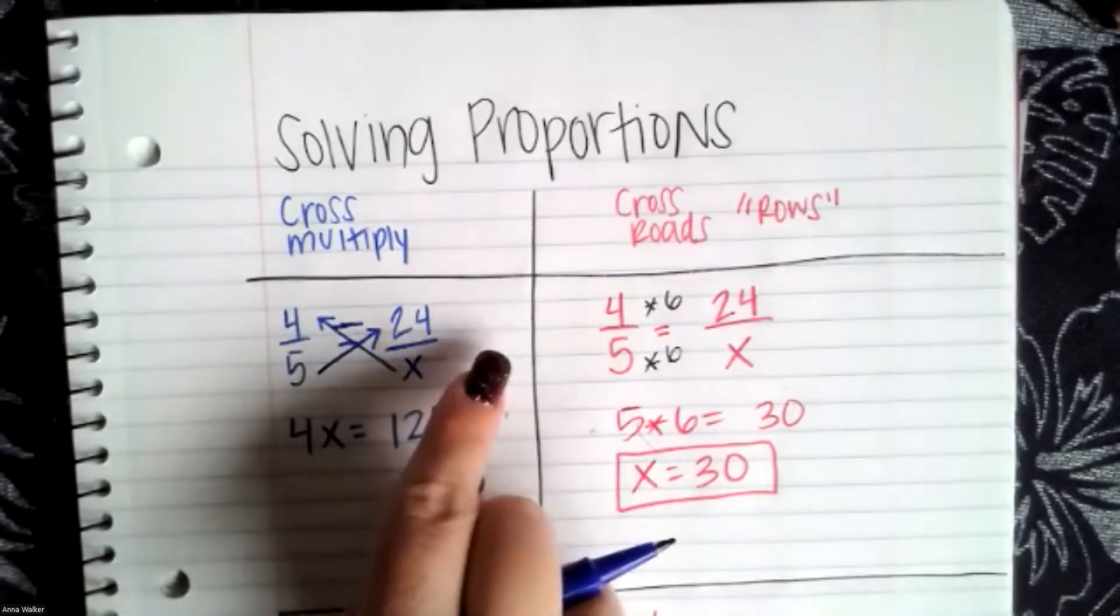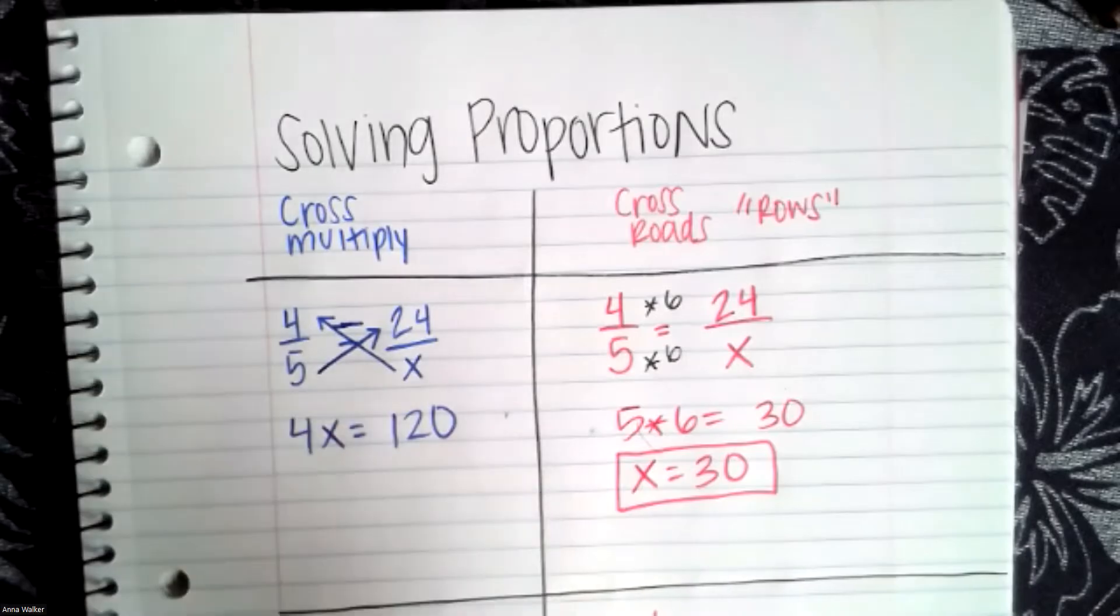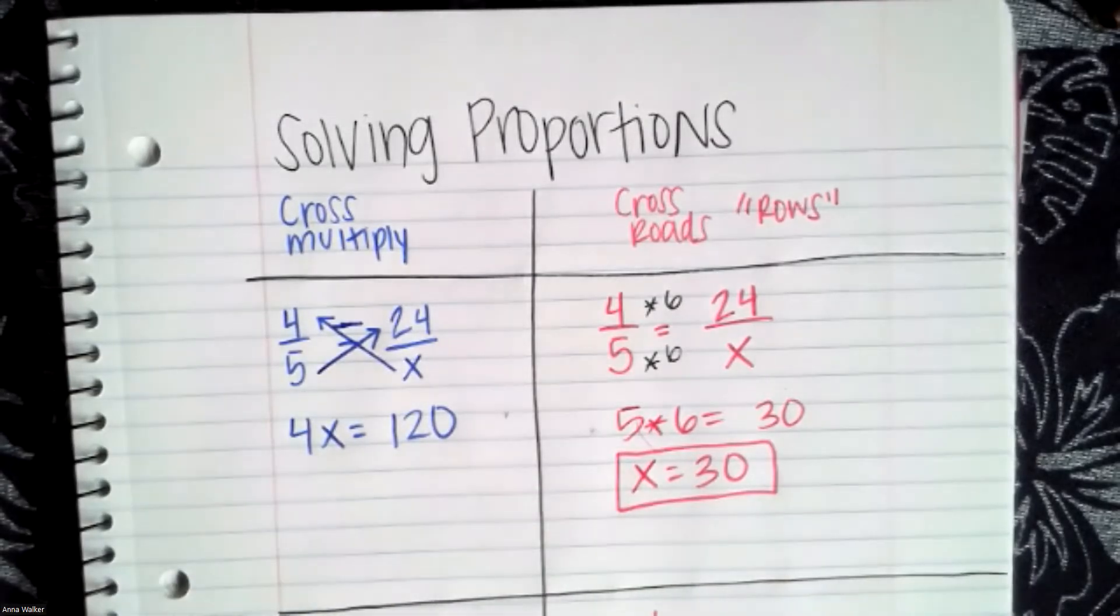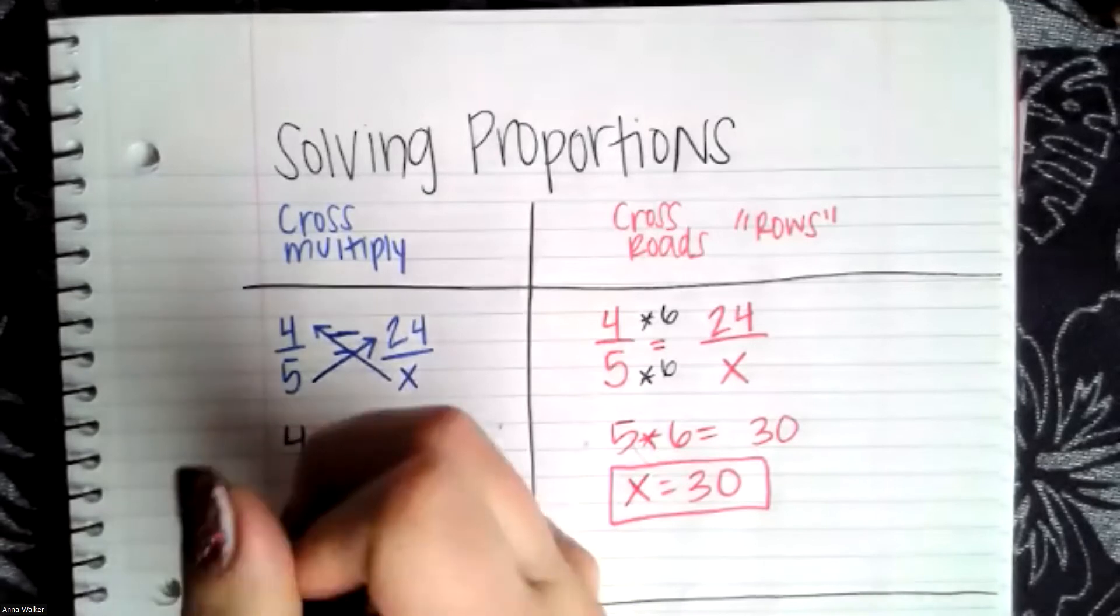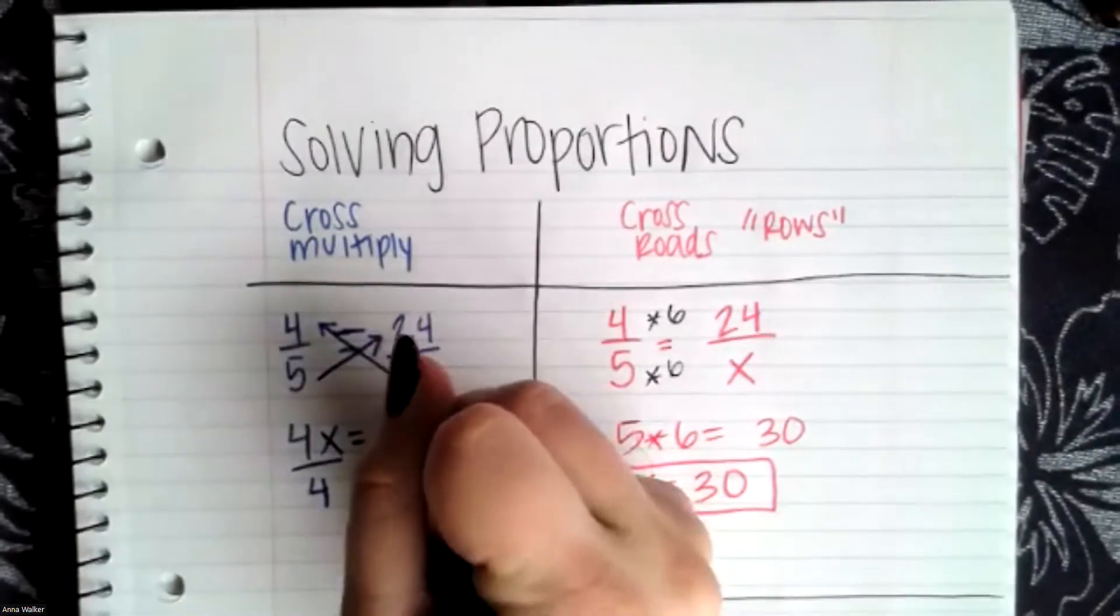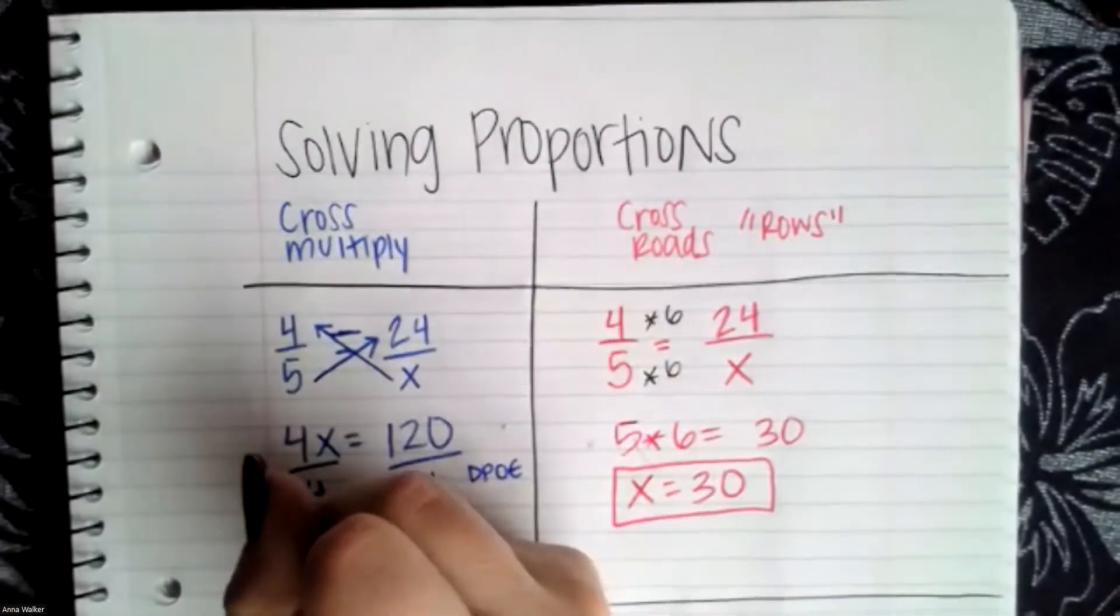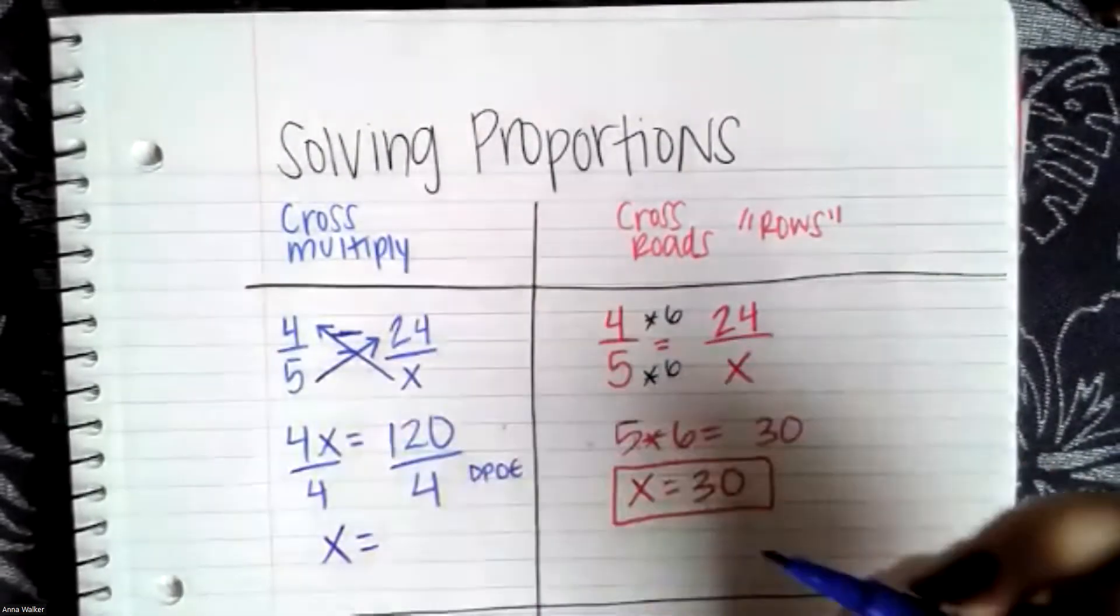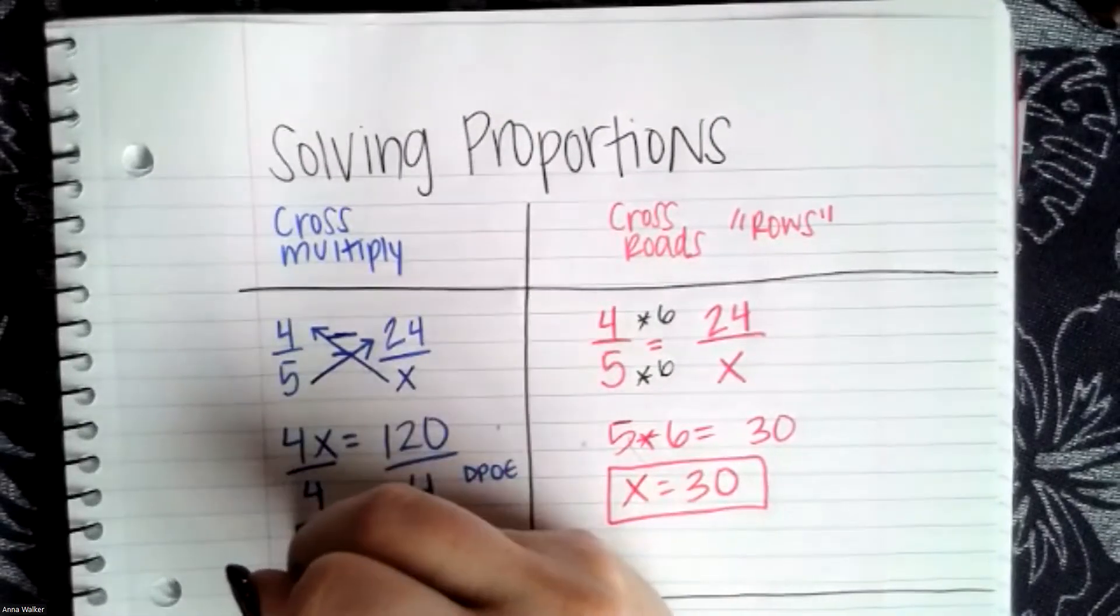So I have this equation now, four times X is equivalent to five times 24, which is the same as 120. If I want to solve for X, I'm just going to use what I know about solving equations, which are my properties of equality. So 4X means four times X, so I'm going to use that division property of equality to solve. So X in this case, 120 divided by four is also 30, which is what we got before.